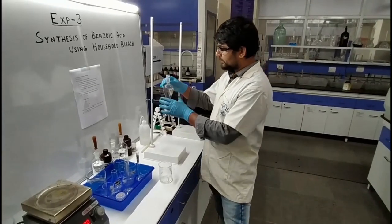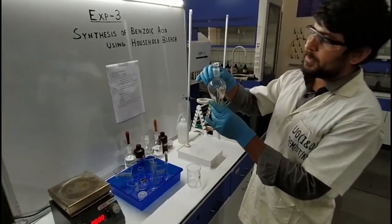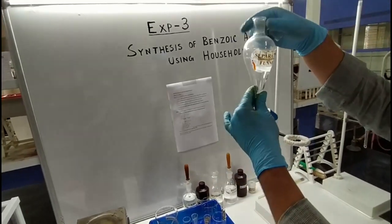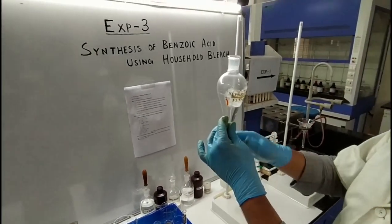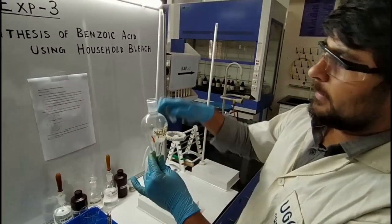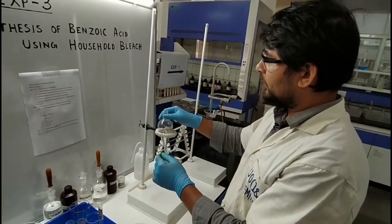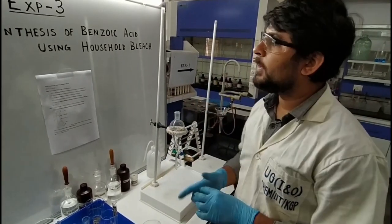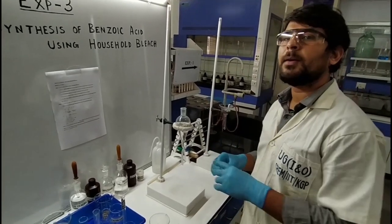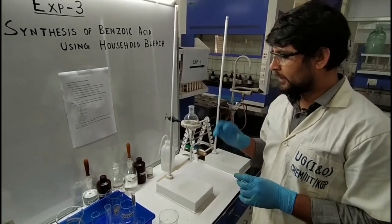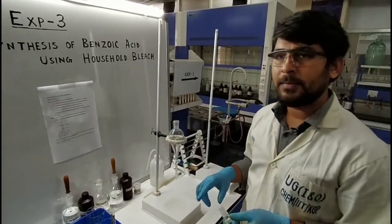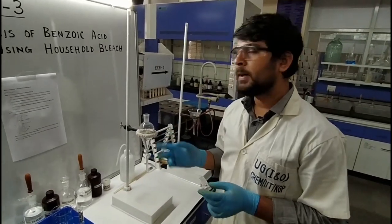After 10 minutes, we have to take a separating funnel like this. We have to transfer the reaction mixture into the separating funnel after 10 minutes, and then we also have to add 10 ml of diethyl ether into it. So two things we have to transfer into the separating funnel: one is the reaction mixture and the other is 10 ml of diethyl ether.